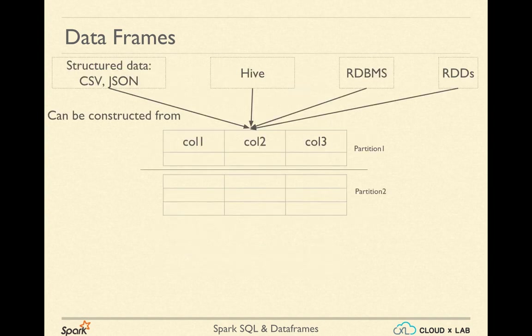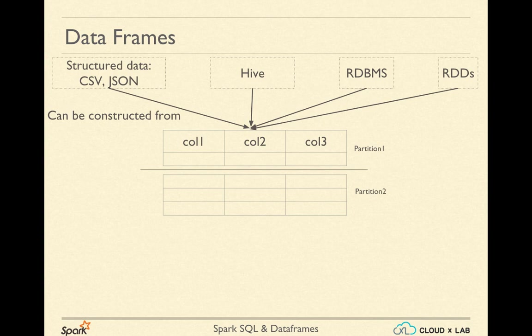DataFrames can be constructed using structured data files such as CSV or JSON, from tables in Hive, or from tables in relational databases such as MySQL, Oracle, Postgres, or Microsoft SQL. DataFrames can also be converted from existing RDDs by parsing the records and imposing a schema. If we cannot directly load something into a DataFrame, we first create an RDD and then convert it into a DataFrame using transformations or actions.